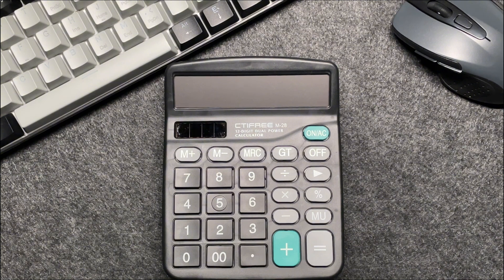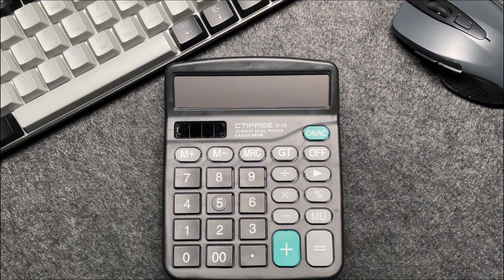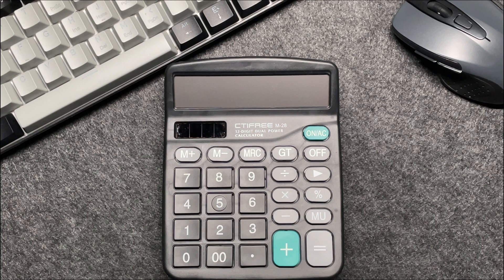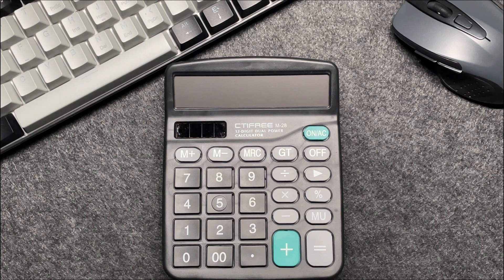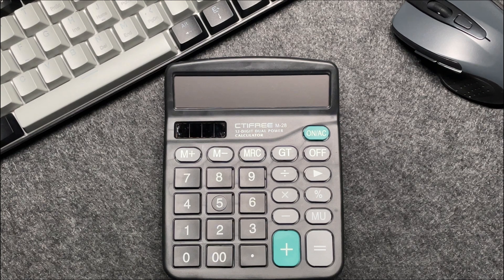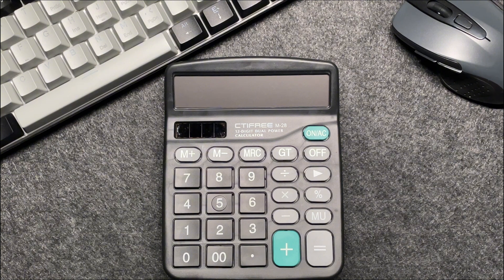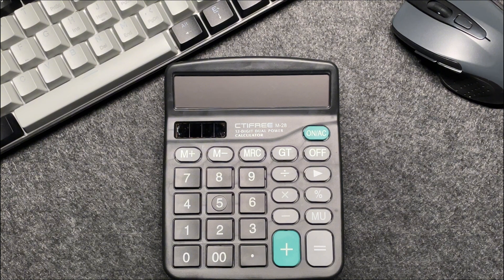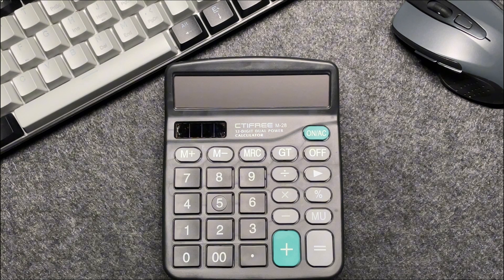All right, let's start with an example. Suppose you have an item that costs $1,357. You want to find out what the final price will be after applying a 35% discount. Here's how to do it in just three easy steps.